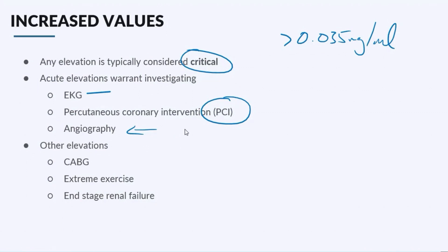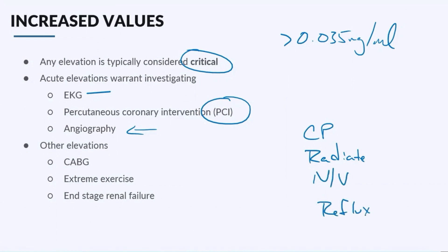I want to encourage you to pay attention to what's going on with your patient. If your patient is having typical heart attack symptoms, they're going to have chest pain or it could radiate. They could have nausea or vomiting. And in women, it could be something as simple as what feels like reflux or an upset stomach. If your patient is experiencing any one of those things and your troponin is elevated, you've got to figure out what's going on with your patient.